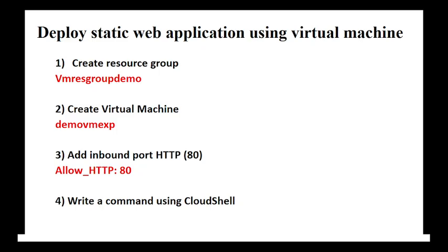The first step is you have to create a resource group and give it a name of your choice. The second step is to create a virtual machine, giving it a name, selecting the region, operating system, and disk size. In the third step, go to the network settings and attach an inbound port — HTTP port number 80 — to your virtual machine.